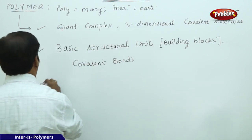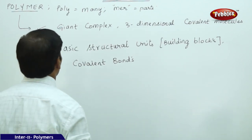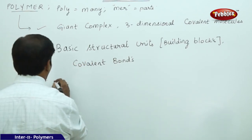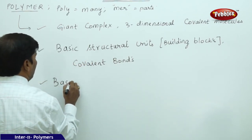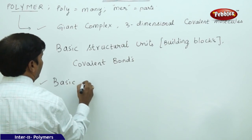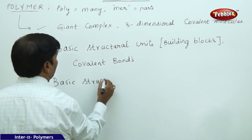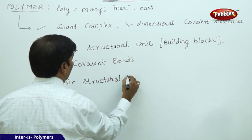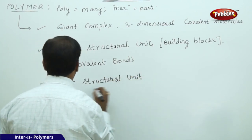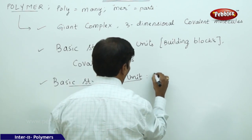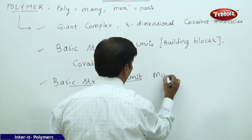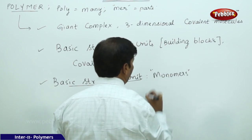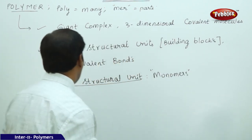If you take the basic structural unit of a polymer, we call it a monomer.